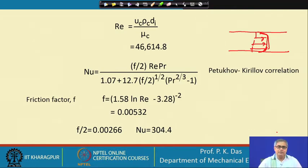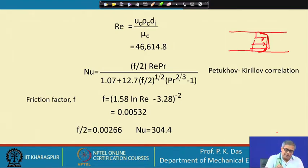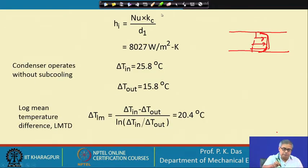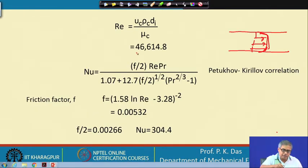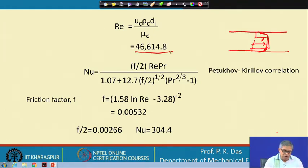The turbulent flow heat transfer coefficient will be given by a Nusselt number–Prandtl number kind of relationship. We know the inner diameter, we know the fluid properties, and we have selected a coolant velocity of 2 meters per second. So the Reynolds number we get — and we use the Petukhov-Kirilov kind of correlation.